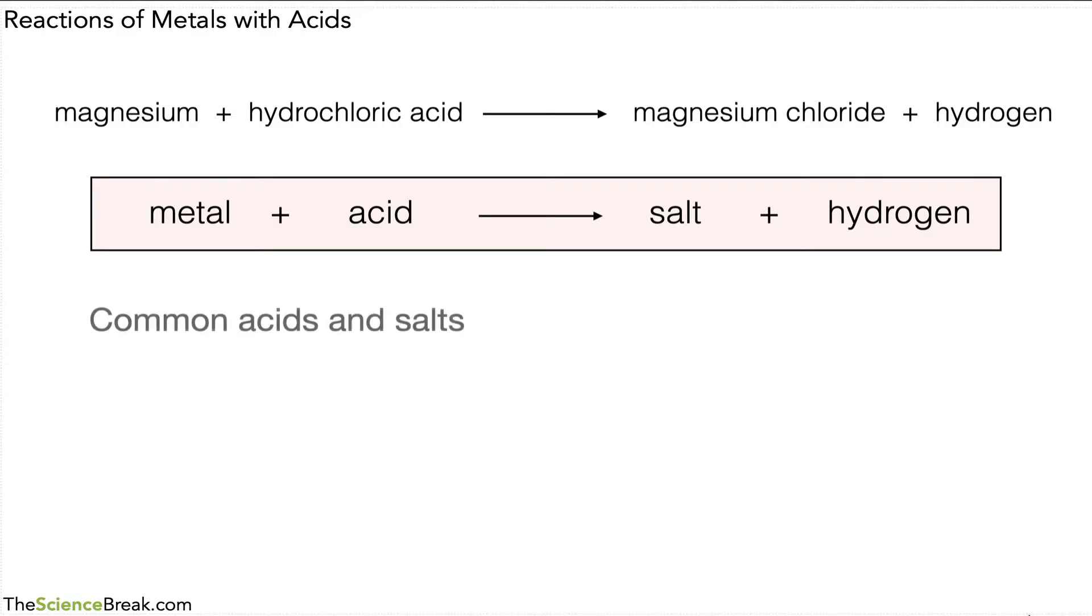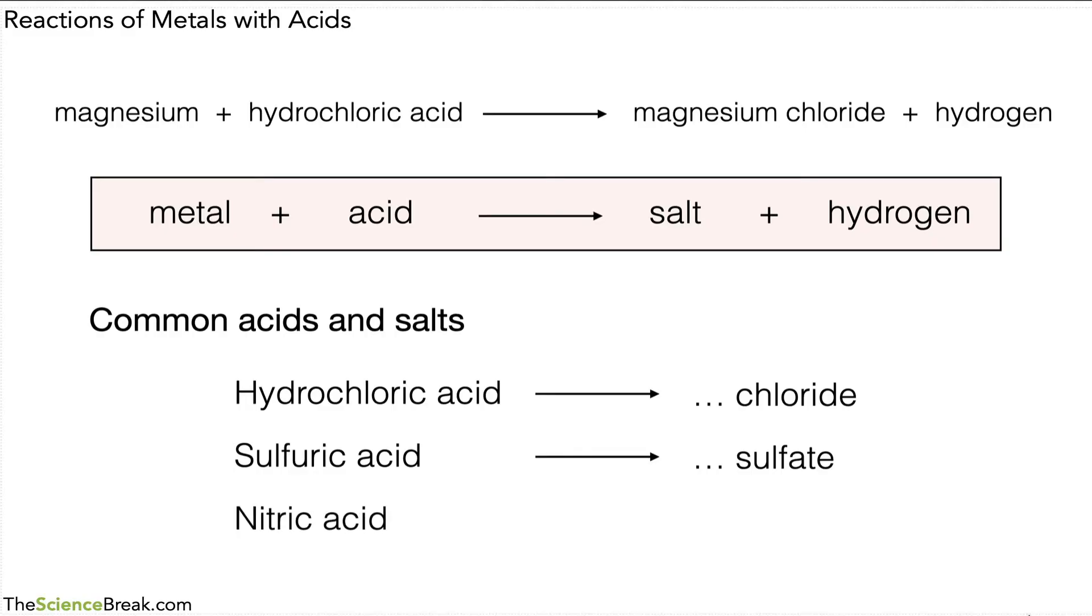It's also important to remember some common acids and the types of salt they make. So we have hydrochloric acid, which will make a type of salt called a chloride salt. We have sulfuric acid, and this will make a sulfate salt, and we have nitric acid, which will make a salt called something nitrate.